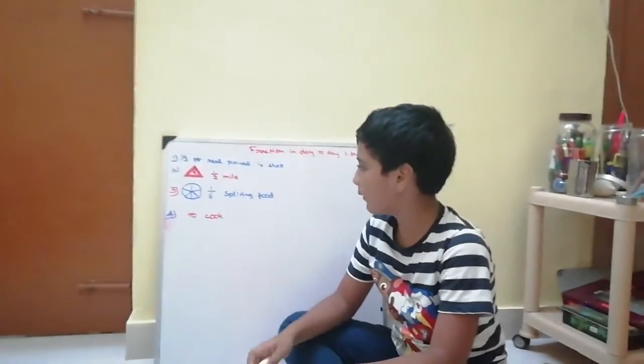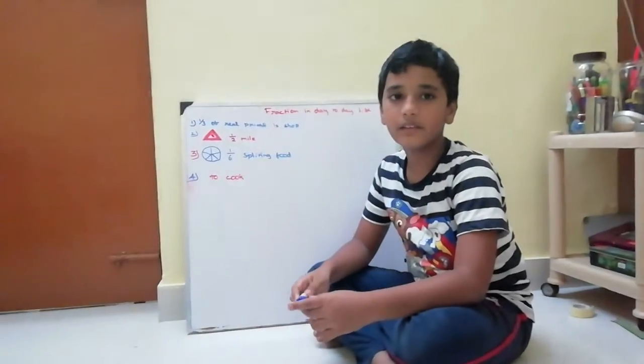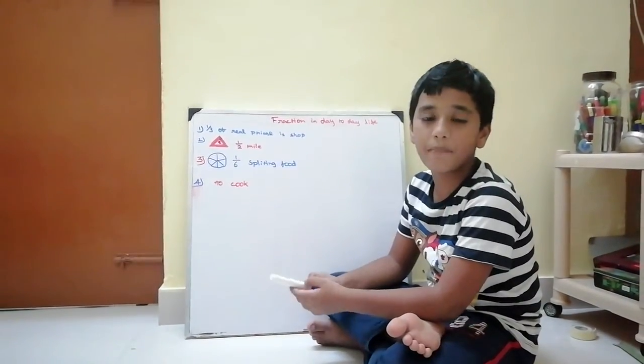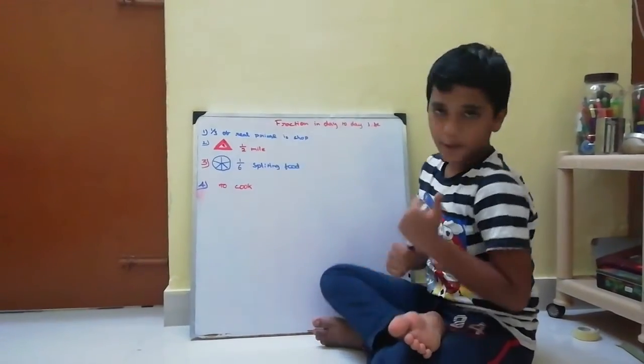For example, first point: 1 by 3 of price, 1 by 3 percent discounts on real price. Example 2.